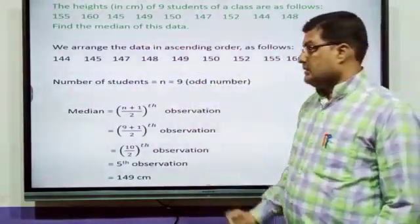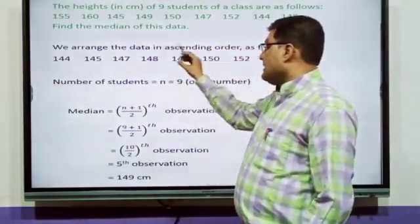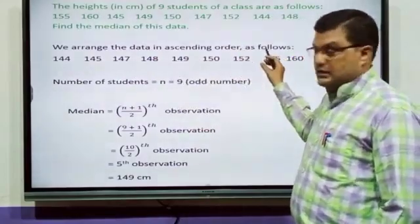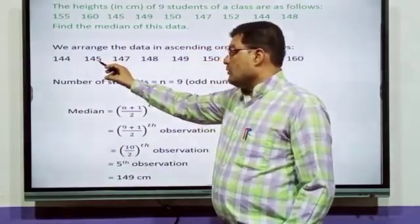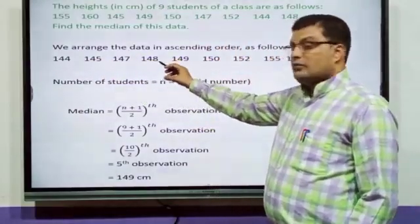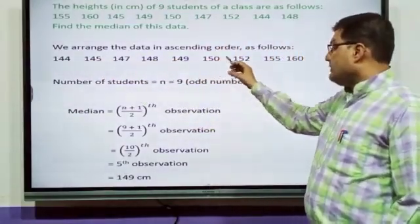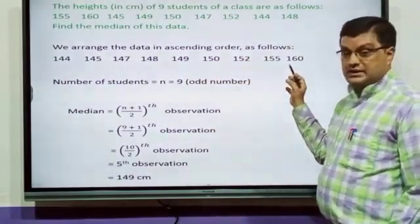How to find median? First, we have to arrange the data in the ascending order as follows. We have to arrange the data in ascending order: 144, 145, 147, 148, 149, 150, 152, 155, 160.